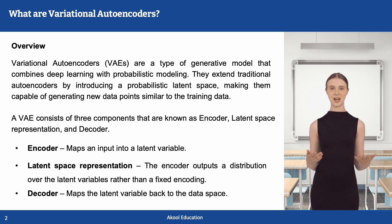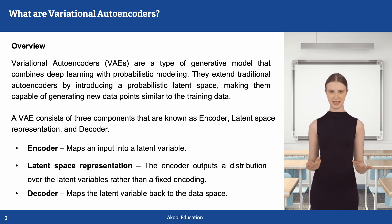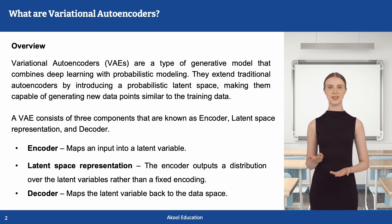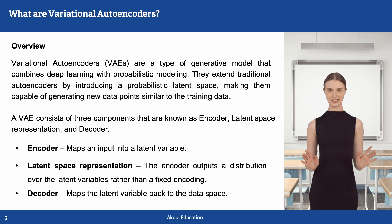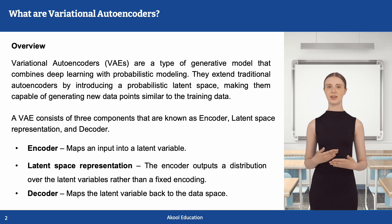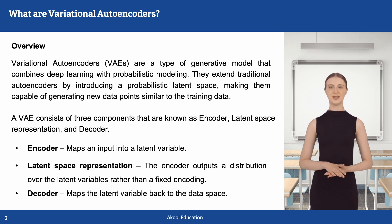A variational autoencoder consists of three key components. The encoder maps the input data into a probability distribution in a lower-dimensional latent space, instead of a fixed encoding. The encoder outputs a distribution over the latent variables. The decoder reconstructs data by sampling from the latent space and mapping it back to the original space.